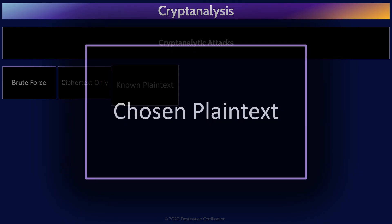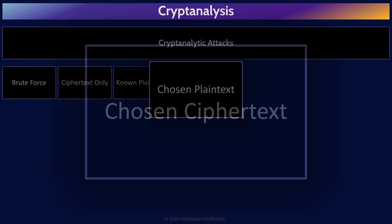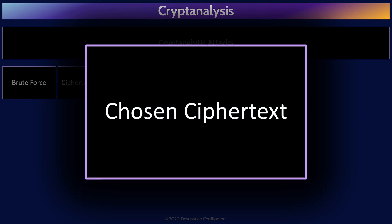The next two types of attacks have the word 'chosen' in them. 'Chosen' means the attacker has access to the machine or algorithm being used to perform the encryption and decryption. In a chosen plaintext attack, the attacker chooses what plaintext to feed into the machine or algorithm and then looks at the resultant ciphertext to try and deduce the key. A chosen ciphertext attack is the same idea but in the other direction: the attacker chooses what ciphertext to feed in and then looks at the resultant plaintext to try and deduce the key.